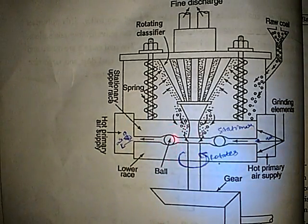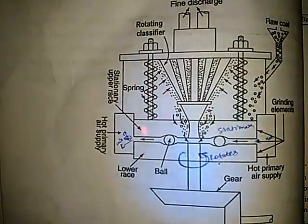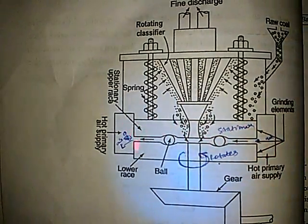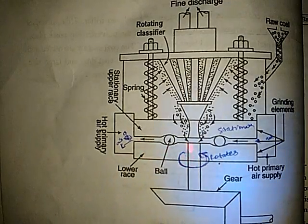Here this entire thing is known as stationary upper race. It is originally in the cylindrical form. And this is a lower race. It is also in the cylindrical form.